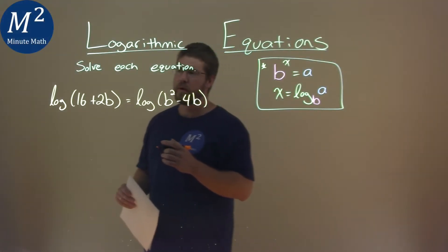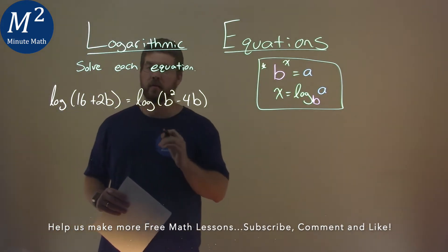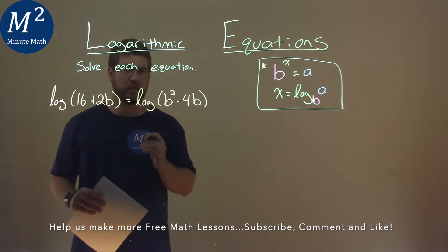We're given this problem right here. Log of 16 plus 2b equals log of b squared minus 4b, and we need to solve this equation.